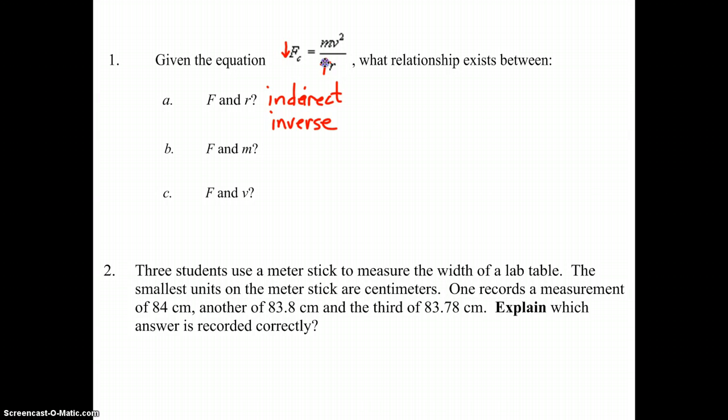The graph that goes with this, if this was f and that was r, would not be a negatively sloped straight line. The graph would actually be a curve. If you'd like more information on that, make sure you ask in class tomorrow.